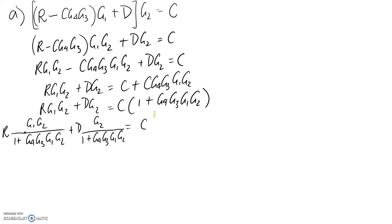That's the answer to part A. We've got an expression for C, the output of our system, in terms of the two inputs R and D as well as all the other transfer functions from the blocks.